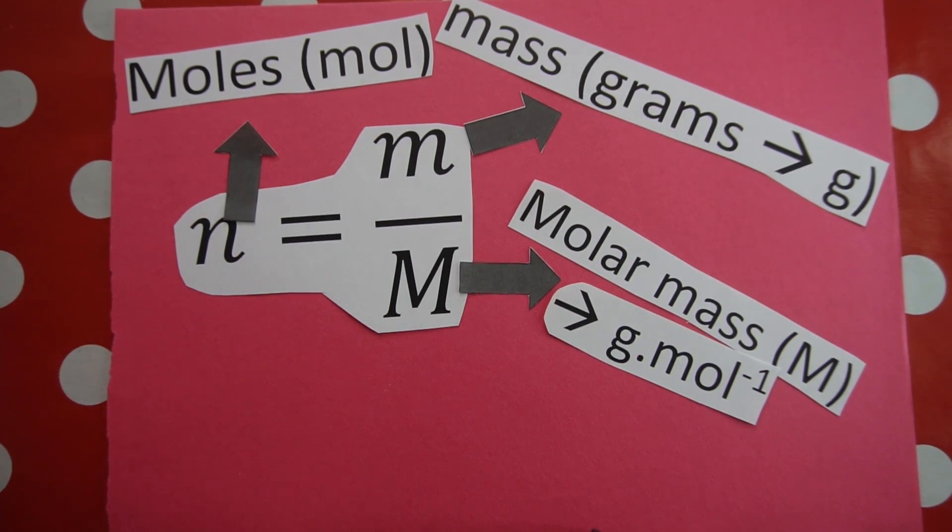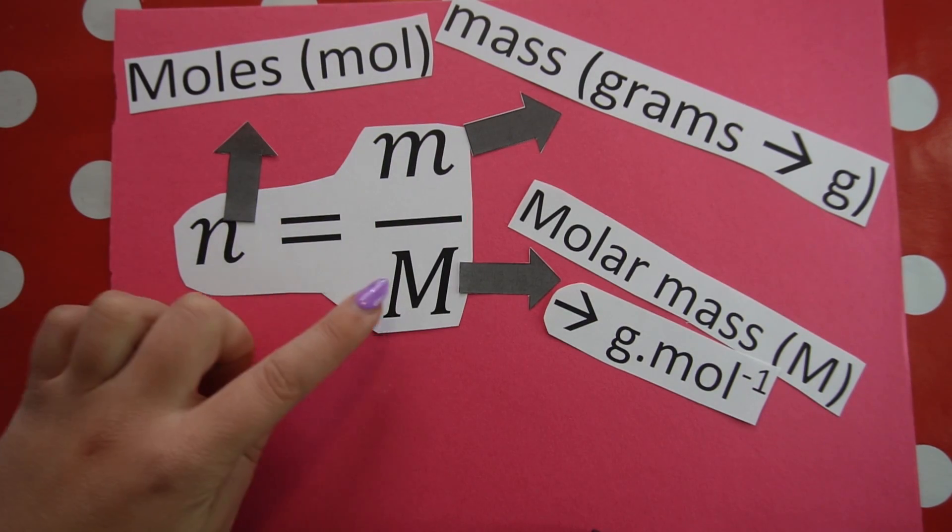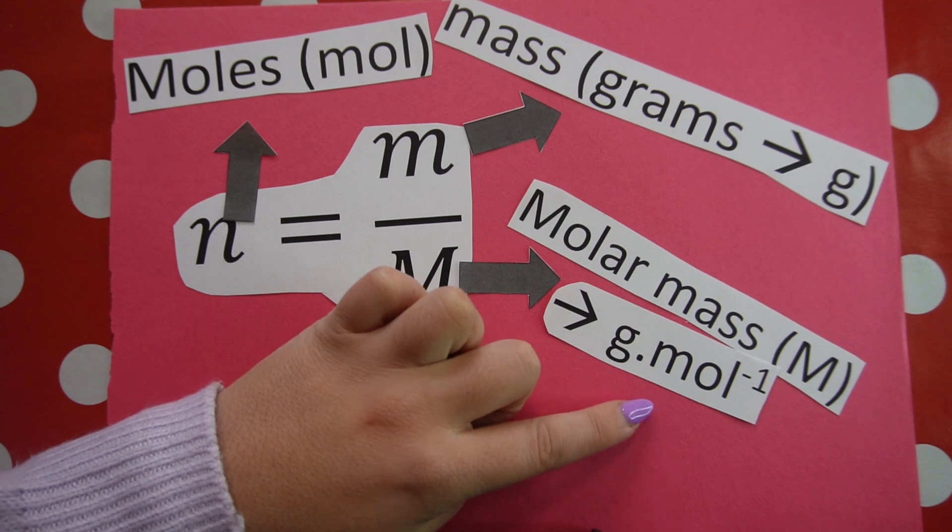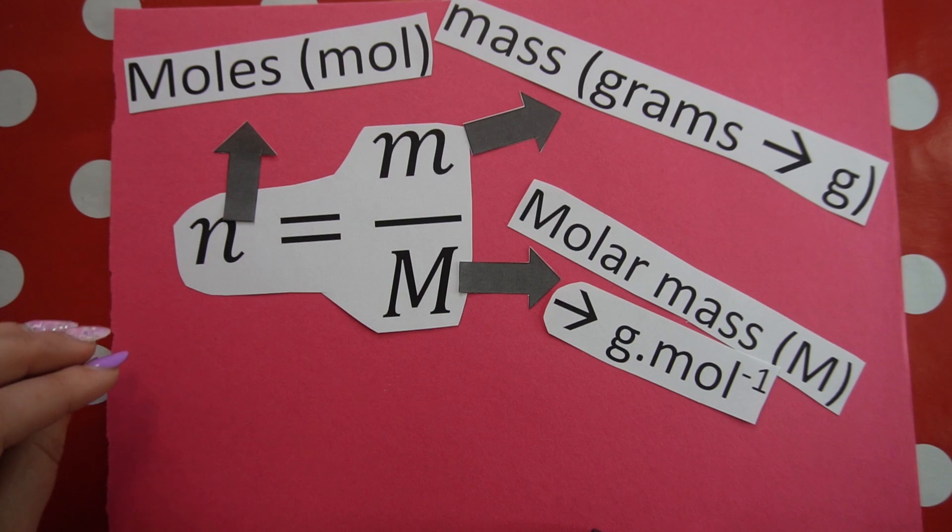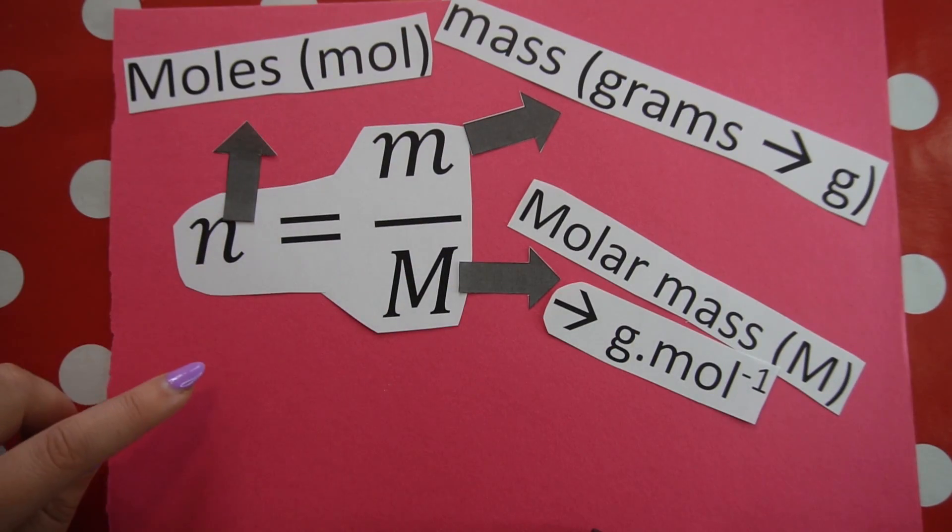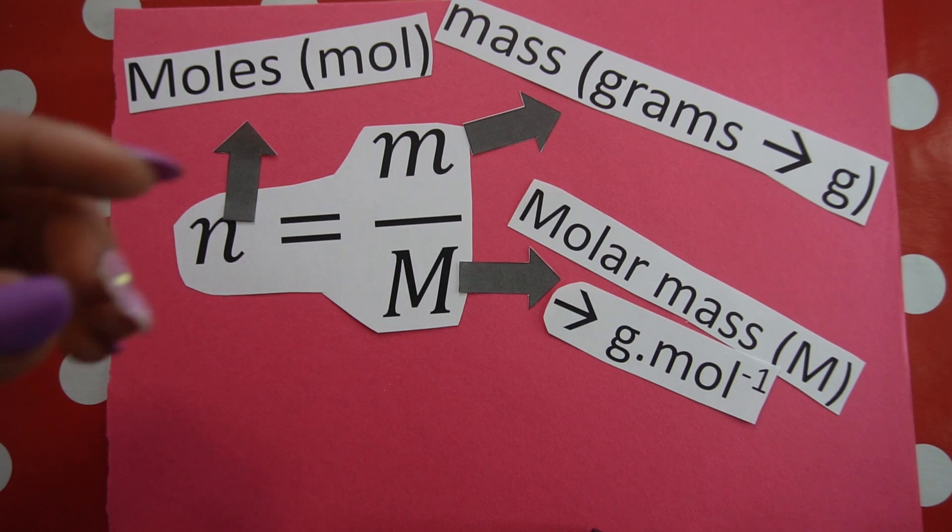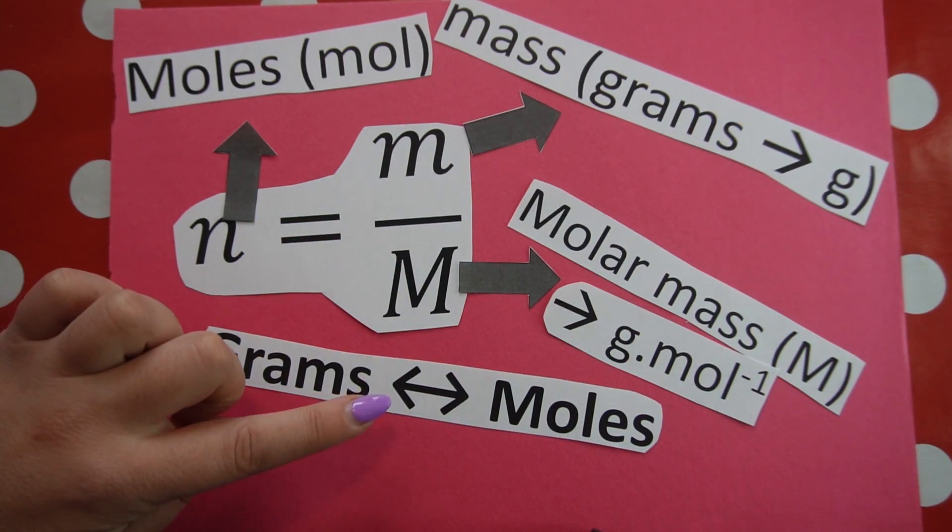Have a look at this formula in more detail. N is number of moles. Baby M is mass, and that is measured in grams. And big M is molar mass, measured in grams per mole. The unit makes sense because look at our other variables in our formula: N being mole and baby M being grams, grams per mole. And remember, this formula allows us to convert between grams, so mass, and number of moles.